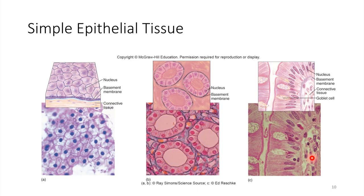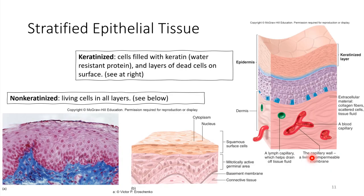Let's look at stratified epithelial tissue in contrast. All of these pink cells — see how layered they are? There are so many layers. Looking at the top, some layers look pretty flattened, like squamous cells, but there are lots of layers stacked on top of each other, so this would be stratified. There's another word to introduce: keratinized versus non-keratinized.